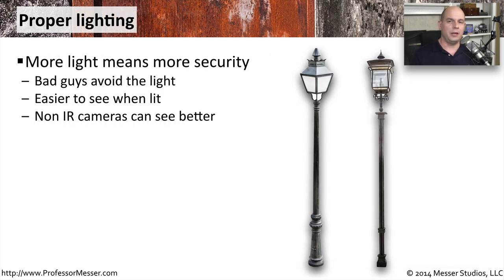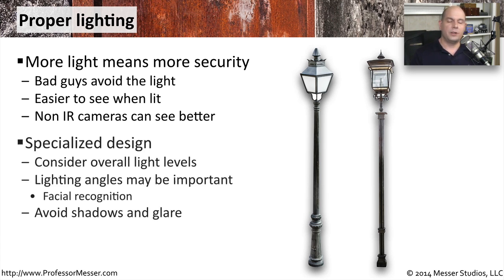When it gets dark, physical security becomes even more important, as attackers can move around without being seen. Using adequate lighting can prevent this, and you can also take advantage of the dark by using infrared cameras. When combining lights with cameras, plan the angles carefully — if the light is at too sharp an angle, there may be too many shadows on a face, making recognition difficult. Also make sure cameras are positioned so light is not shining directly into them, creating glare.